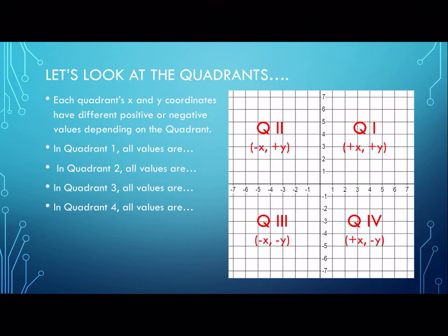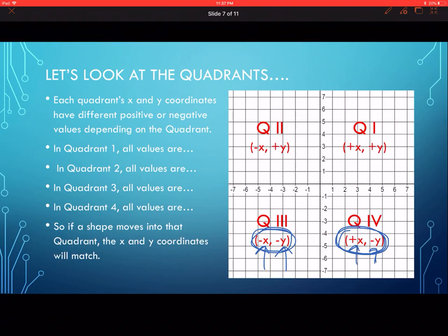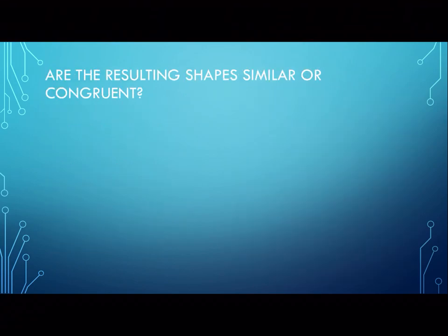The reason this matters is that when we talk about rotations, we're going to notice something happening as we move 90 degrees or 180 degrees. The hard part about rotations is figuring out where my shape lands. If it lands in quadrant four, its x value is always positive and its y value is always negative. If it lands in quadrant three, both x and y values are always negative. So it's important to pay attention to the x and y coordinates and make sure they match the quadrant.